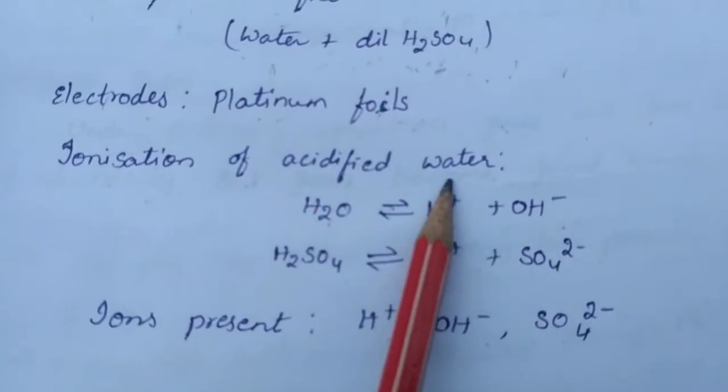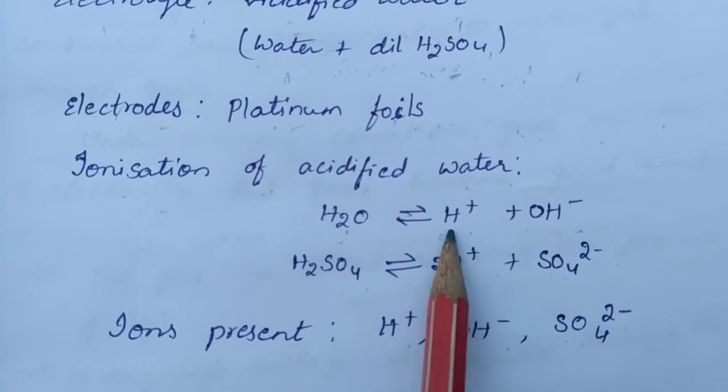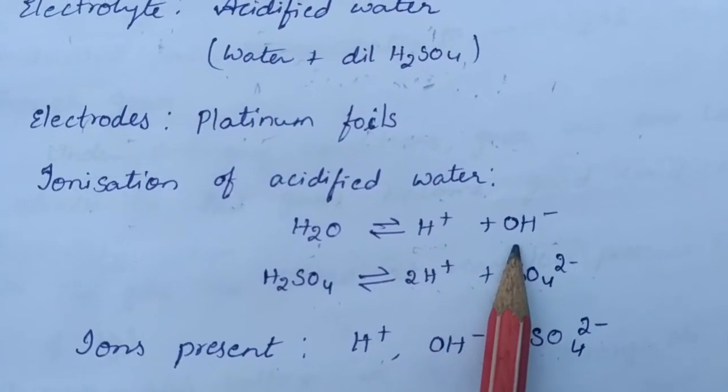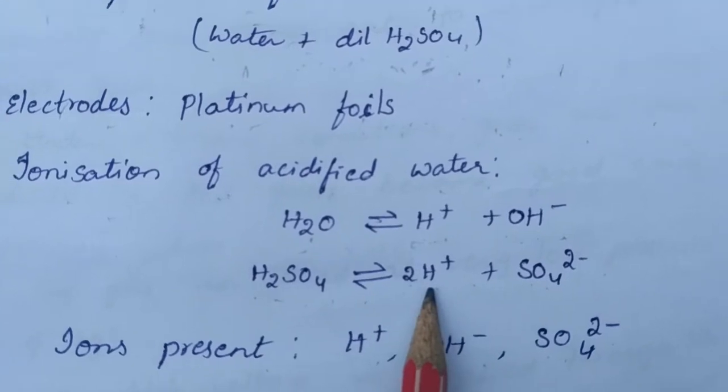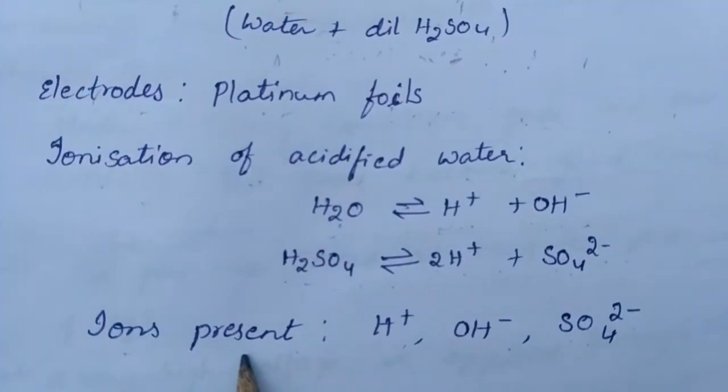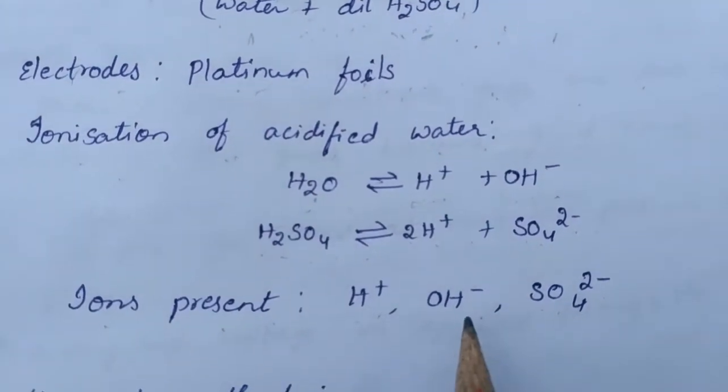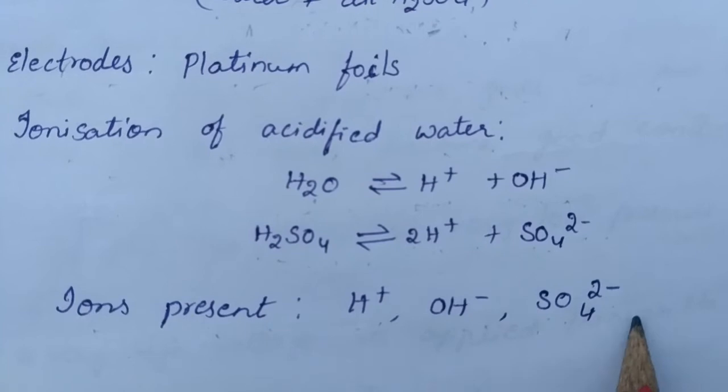Ionization of acidified water: Water on electrolysis changes to H+ ions and OH- ions, and sulfuric acid changes to 2H+ ions and SO4^2- ions. The ions present are H+ ions, OH- ions, and SO4^2- ions.